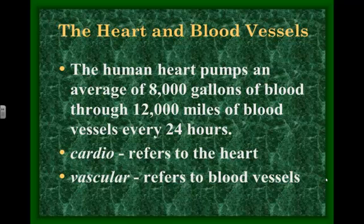The human heart pumps, on average, 8,000 gallons of blood through 12,000 miles of blood vessels every single day. We don't have 8,000 gallons of blood, but that blood is recycled over and over again, just like it's purified over and over again by your kidneys. It's also pumped by your heart over and over again. We have way more than 12,000 miles of blood vessels — that's like if you traced one red blood cell all the way through your body for one whole day.